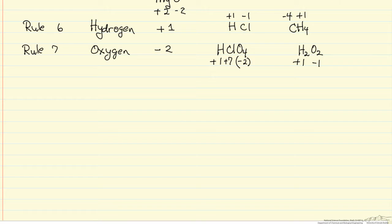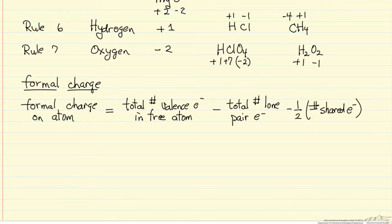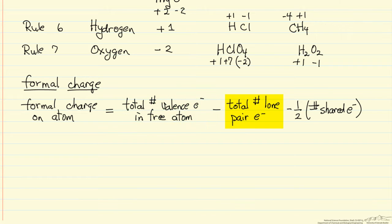It's important to understand that there is a very big difference between the oxidation state and the formal charge. The formal charge has its own rule for calculation, and we use it to decide which Lewis structure might be the better structure based on minimizing the formal charge. To calculate formal charge, we take the total number of valence electrons in the free atom, subtract the total number of lone pair electrons for that atom in the compound, and then subtract one half the number of shared electrons that atom shares with other atoms.